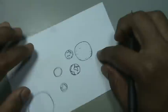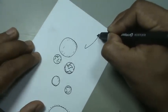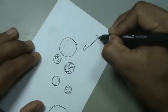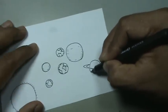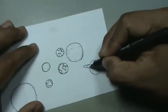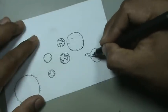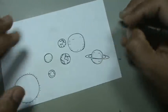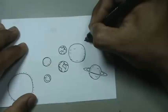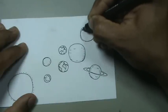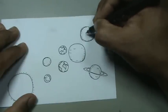Vamos a dejar primero los anillos de Saturno. Tenemos a Saturno. Seguido tenemos a Urano. Algunos detalles por aquí a Urano.